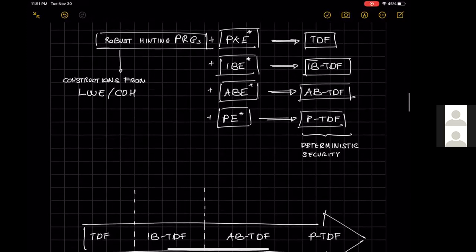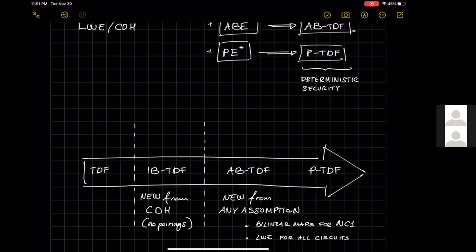In terms of plain TDFs, our work gives a more modular way to construct trapdoor functions without necessarily implying results from new assumptions. For identity-based trapdoor functions, we show the first construction from the Computational Diffie-Hellman assumption in pairing-free groups — prior work only achieved this from pairings or LWE. For attribute-based and predicate trapdoor functions, we are not aware of any prior construction under any computational assumption; by plugging in the appropriate encryption scheme, we obtain constructions from bilinear pairings.